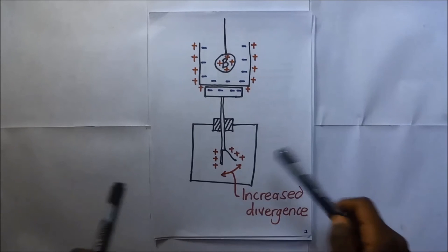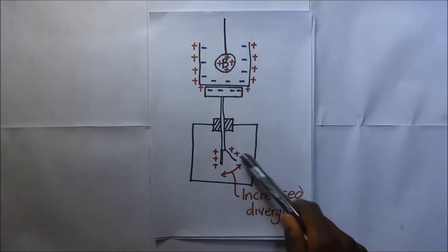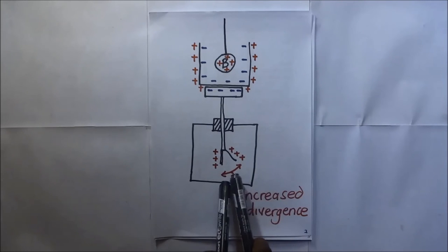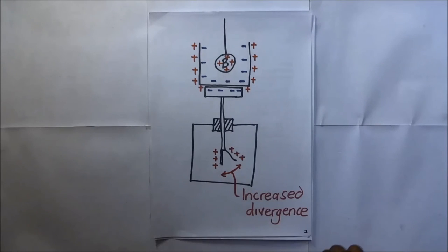Why does it increase further? Because now the magnitude of the positive charges has increased. Remember the laws of electrostatics state that like charges will repel. That's why they repel. But if these were unlike, they would attract.